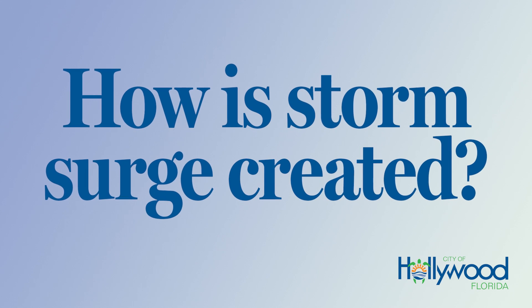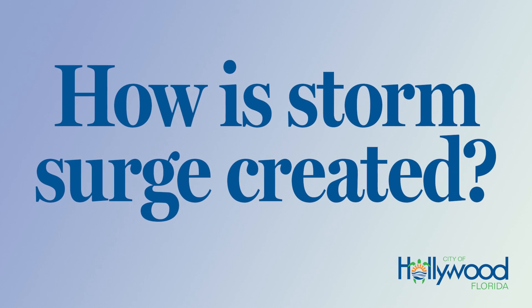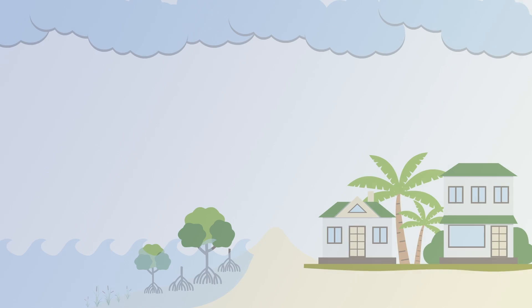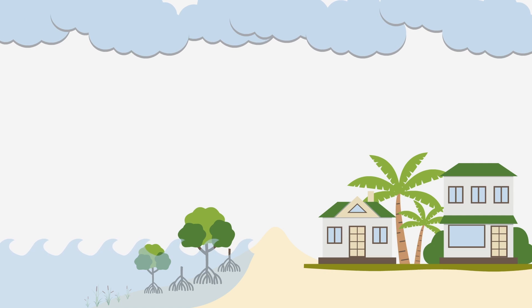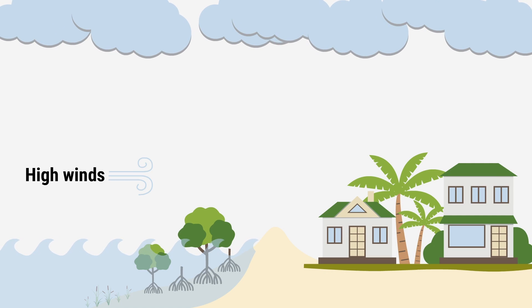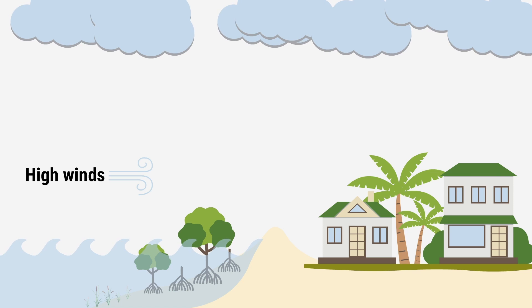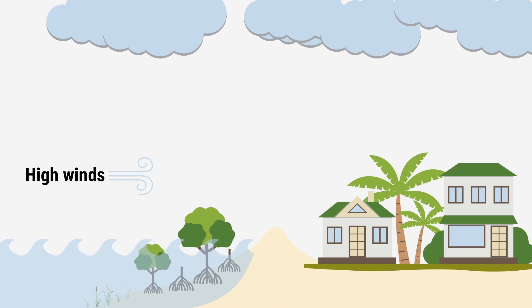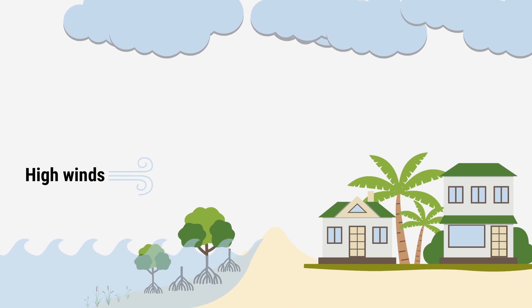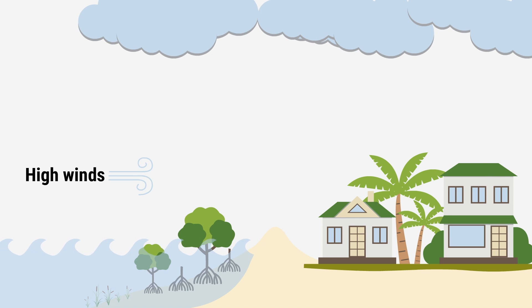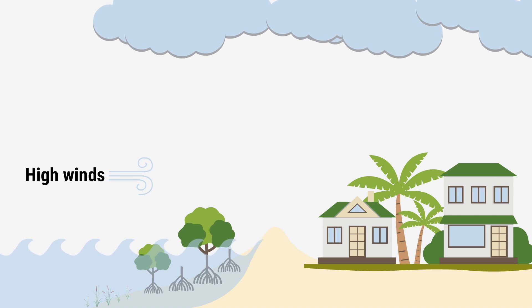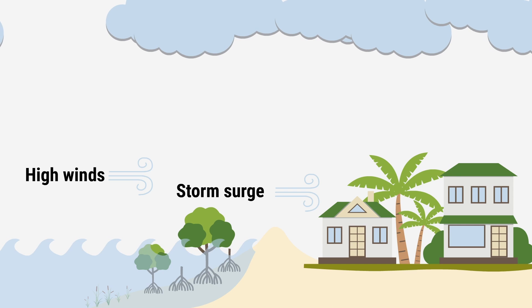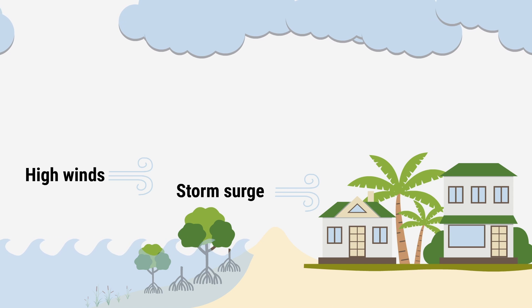How is storm surge created? During a hurricane, constant, intense winds travel over the ocean's surface, pushing the water toward the shoreline. Once that water hits land, it has nowhere to go but inland.